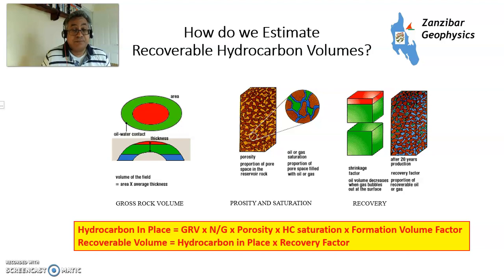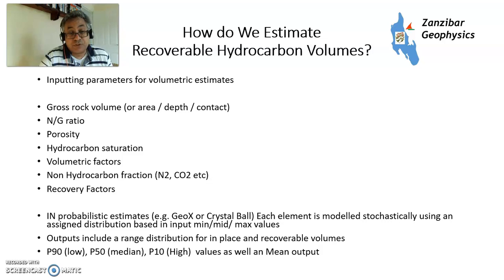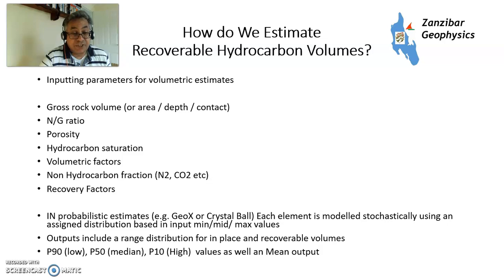Gross rock volume is the amount of rock that the structure contains. Net-to-gross is the amount of rock that is of reservoir quality. Porosity is the portion of the rock which is made up of holes. Hydrocarbon saturation is the portion of the porosity that contains hydrocarbon, because it will always contain some water. Volumetric factors relate to expansion or contraction of oil or gas when you bring it to surface conditions. You may also include a fraction for non-hydrocarbons, particularly in some gases which have a lot of nitrogen or CO2 — sometimes that could be in the percentages rather than just minor fractions — and then recovery factors.